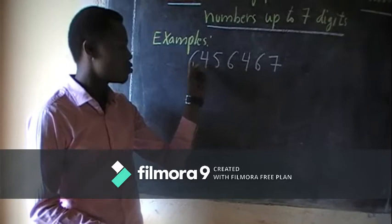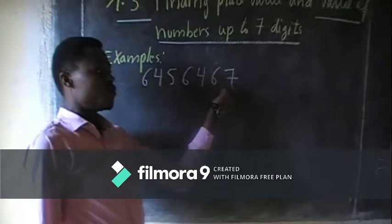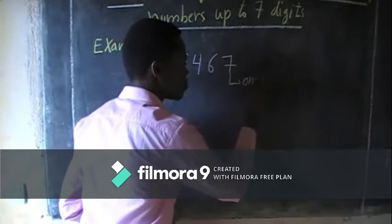Here we are having the number: 7, 6, 0, 4, 5, 4, 6 — a seven-digit number. What is the place value of seven? The place value of this seven is here.